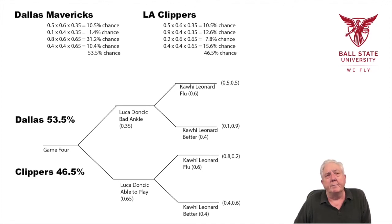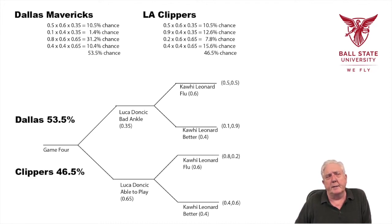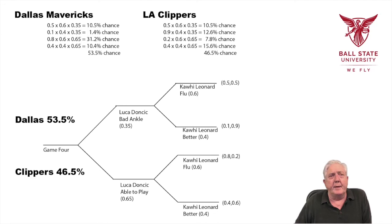If I give you a problem that involves calculating some kind of payoff in a game, and one of the nodes has a percentage, you're going to have to multiply that percentage as you go up through the tree. What do you multiply it by? Typically times one, so it's going to just affect the score. For example, if the score is 10 and 20 and the probability is 0.6, then it's going to be 0.6 times 10, or 0.6 times 20.